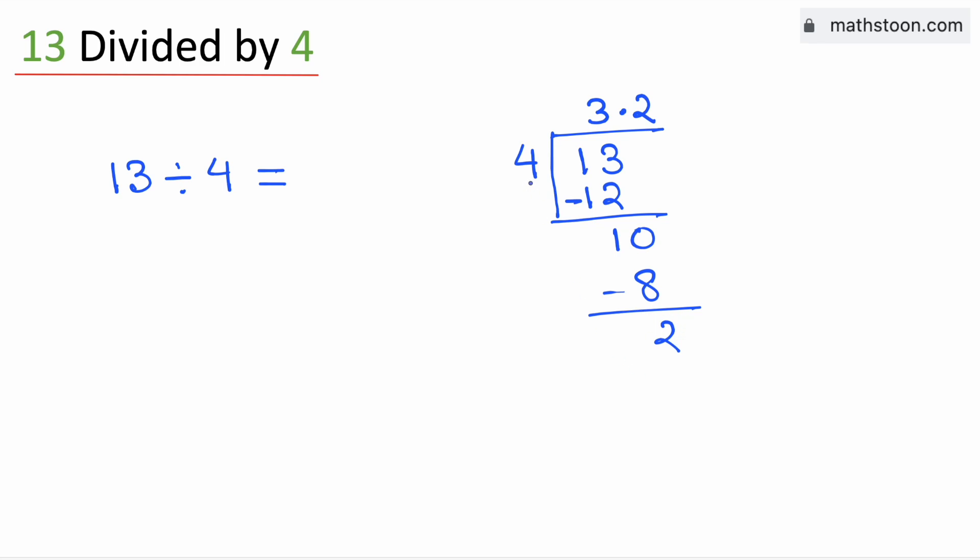Now 2 is less than 4, so we will again borrow one zero, and we know that 4 times 5 is 20. Subtract, we get 0.